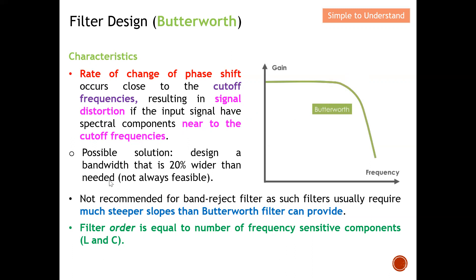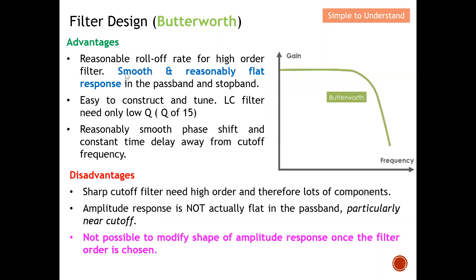Butterworth is not recommended for band-reject filters, as such filters usually require a much steeper slope than Butterworth can provide. The filter order equals the number of frequency-sensitive components — the more components used, the steeper the roll-off factor. It has a reasonable roll-off rate for high-order filters: the more stages, the more components incurred, and hence a better roll-off.